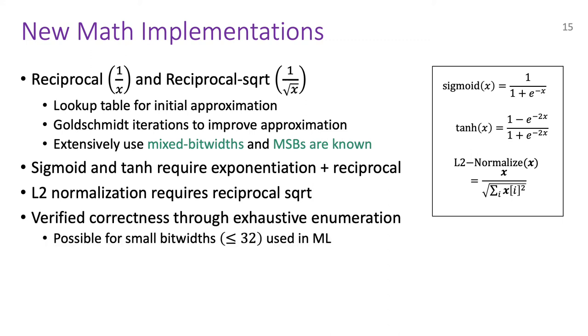We verified the correctness of all our math functionalities through exhaustive enumeration, which is basically checking the output on all possible inputs and is tractable for the bit widths used in ML. We found that our functionalities are precise, having at most 4-ulp error, which means that their output is contaminated in at most 2 bits.